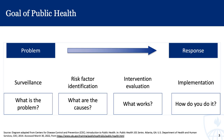That sets us up to talk about the goals of public health, which is to basically identify a problem and develop a response. There are several components of this process. The first is surveillance — what is the problem? The second is risk factor identification — what are the causes of this problem? Next, there's intervention evaluation — what works to address this problem? And finally, implementation — how do you carry it out?